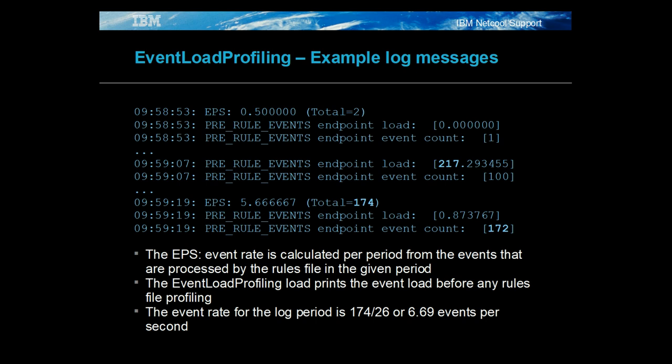Unlike the other event rates, the event load processing is the event load before any rules file processing. This is useful when the probe displays unexpected loading or memory issues and will highlight any event processing backlogs. The EPS value is calculated like the load rules event rate and is based on preprocessed events, not rules file processed events, so their values will not be equal.